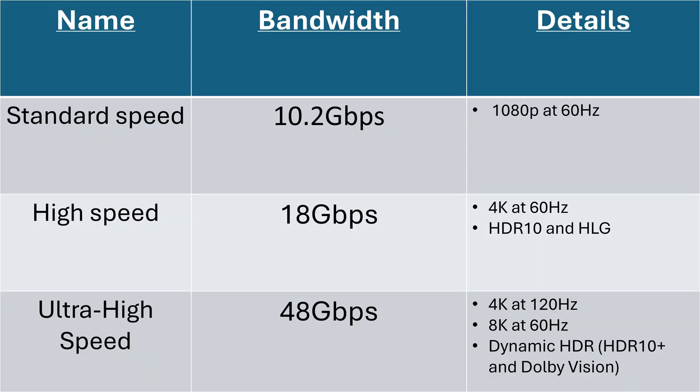The next concept is data transfer rates over HDMI cables. Because HDMI cables are transferring audio and video, it's data — and the more data you can pass through, the higher the quality of video and audio that can come through. I'll put up a PowerPoint slide here. There are three primary standards to know for data transfer rates, and there are more benefits that come with higher transfer rates, such as advanced color sampling.